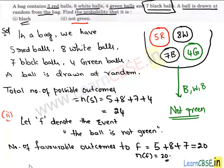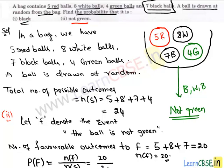According to the problem, the probability that the drawn ball is not green, P(F), is the ratio of the total number of favorable outcomes to F, n(F), to the total number of outcomes, n(S). Here we have the values 20 upon 24. Looking at the numerator and denominator, 4 is the common factor — 4 goes into 20 five times and 4 goes into 24 six times. Therefore, the required probability is 5 upon 6, and this completes our solution.